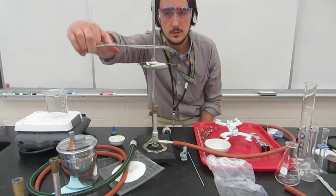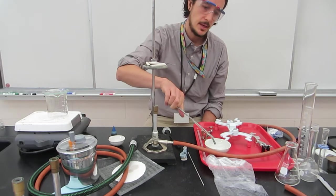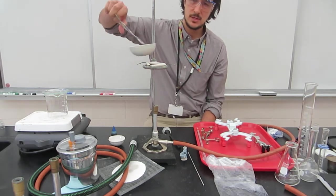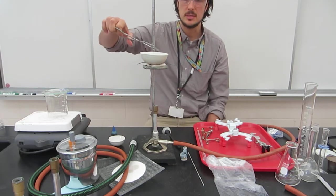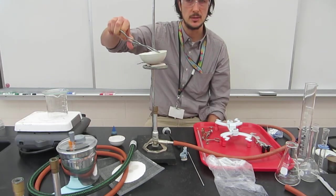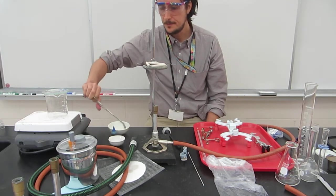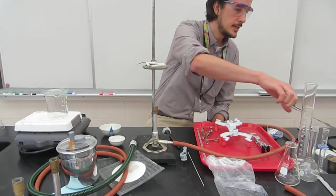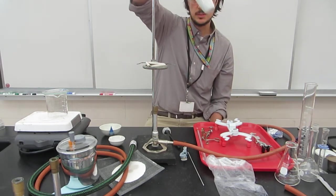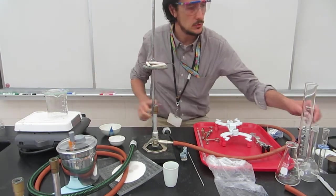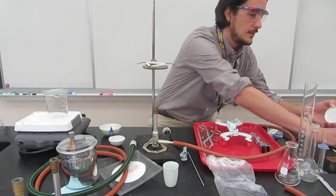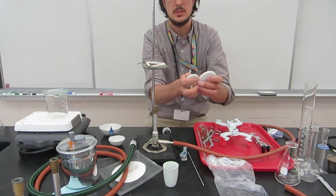This is an evaporating dish. Notice it tips down when you use these. I have a big evaporating dish for this one. Maybe I want a bigger clay triangle but this seems to be okay. This is a 100 milliliter evaporating dish and now I have a crucible.